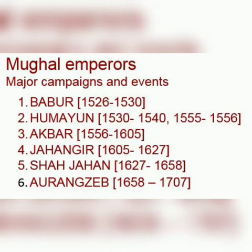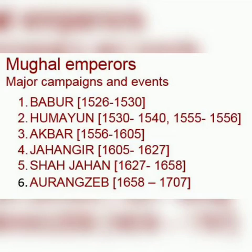In 1568 the Sisodia capital of Chittor was seized, and in 1569 Ranthambore. Second period, 1570–1585: Military campaigns in Gujarat were followed by campaigns in the east — in Bihar, Bengal, and Odisha. These campaigns were complicated by the 1579 and 1580 revolts in support of Mirza Hakim.